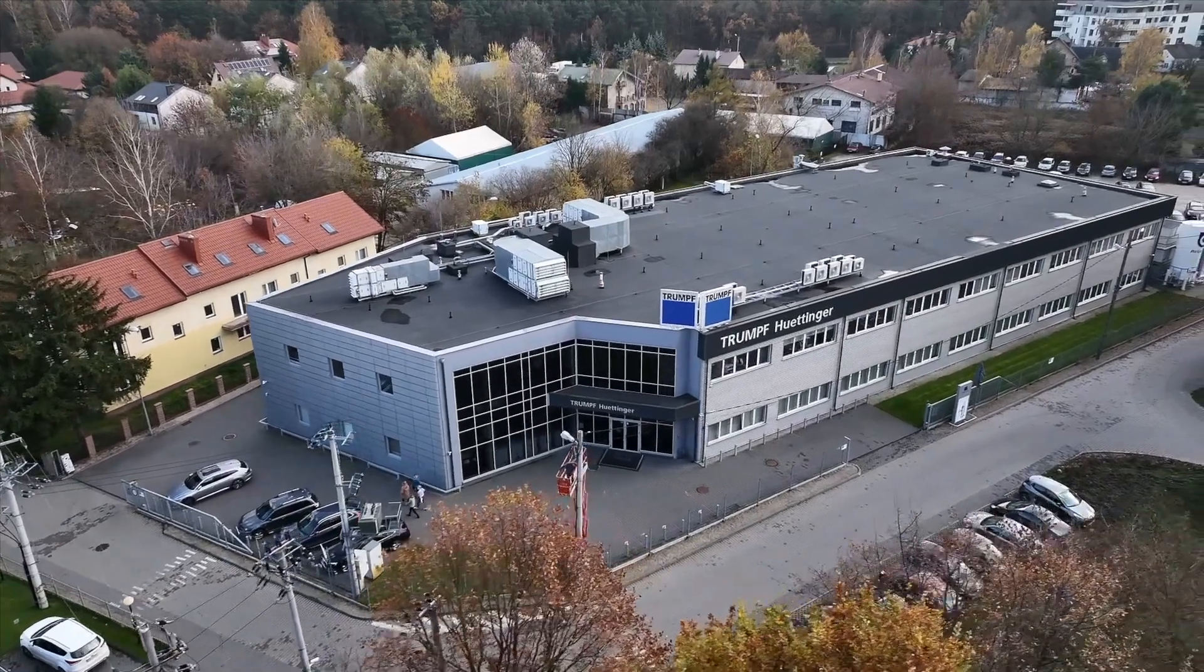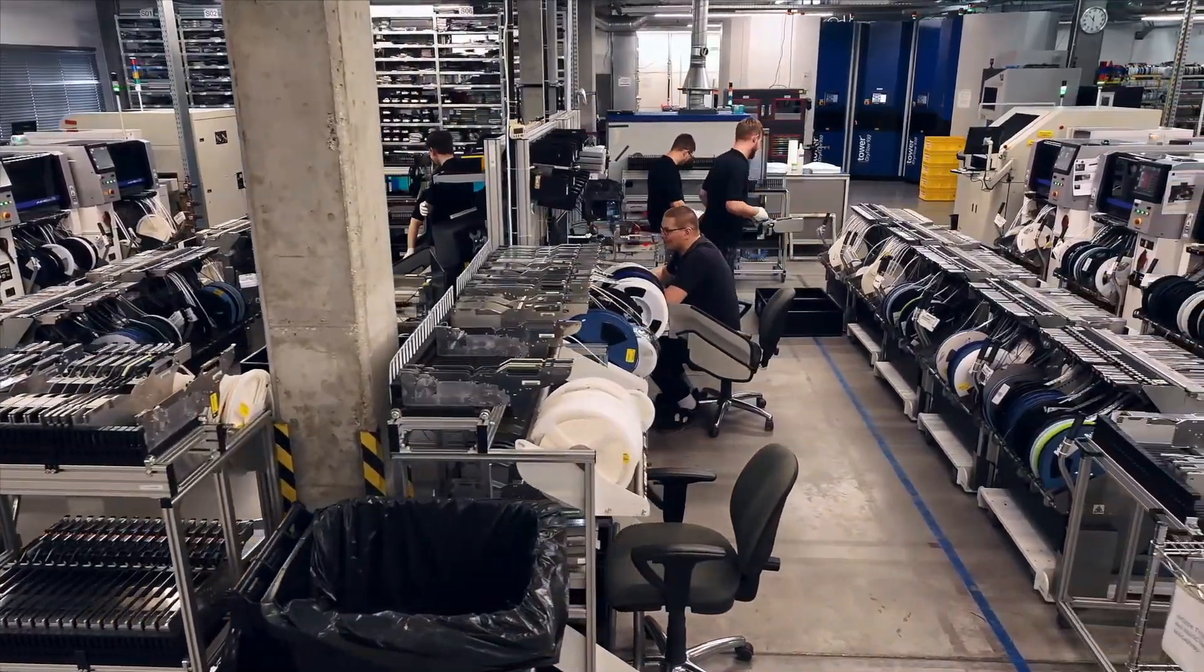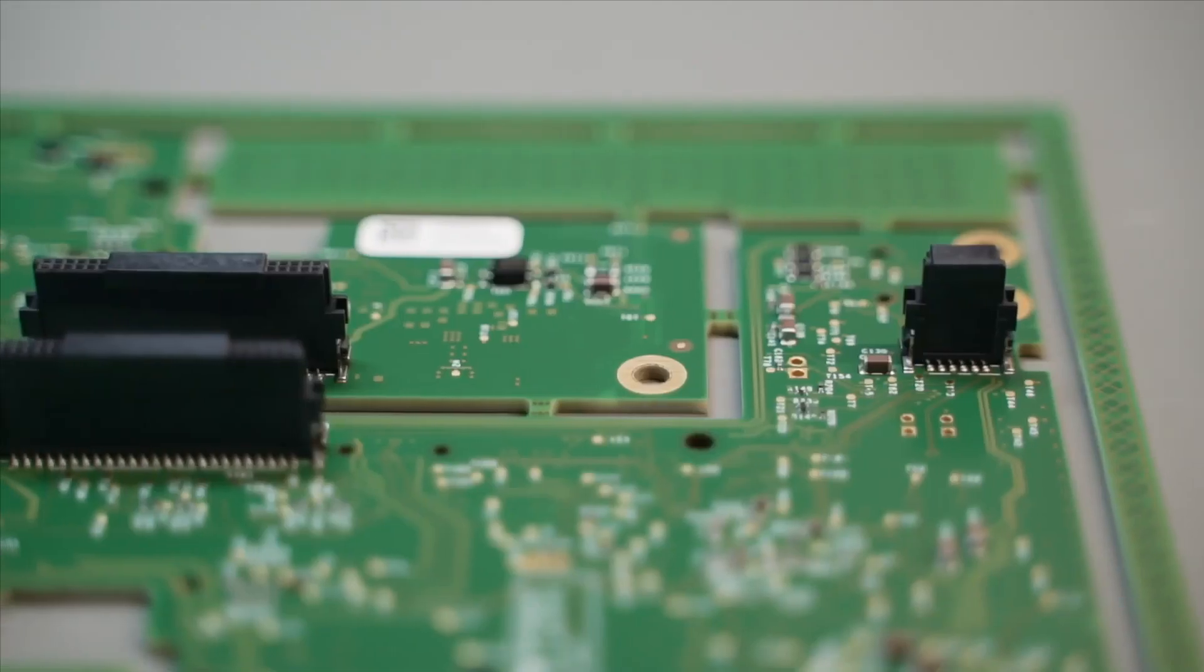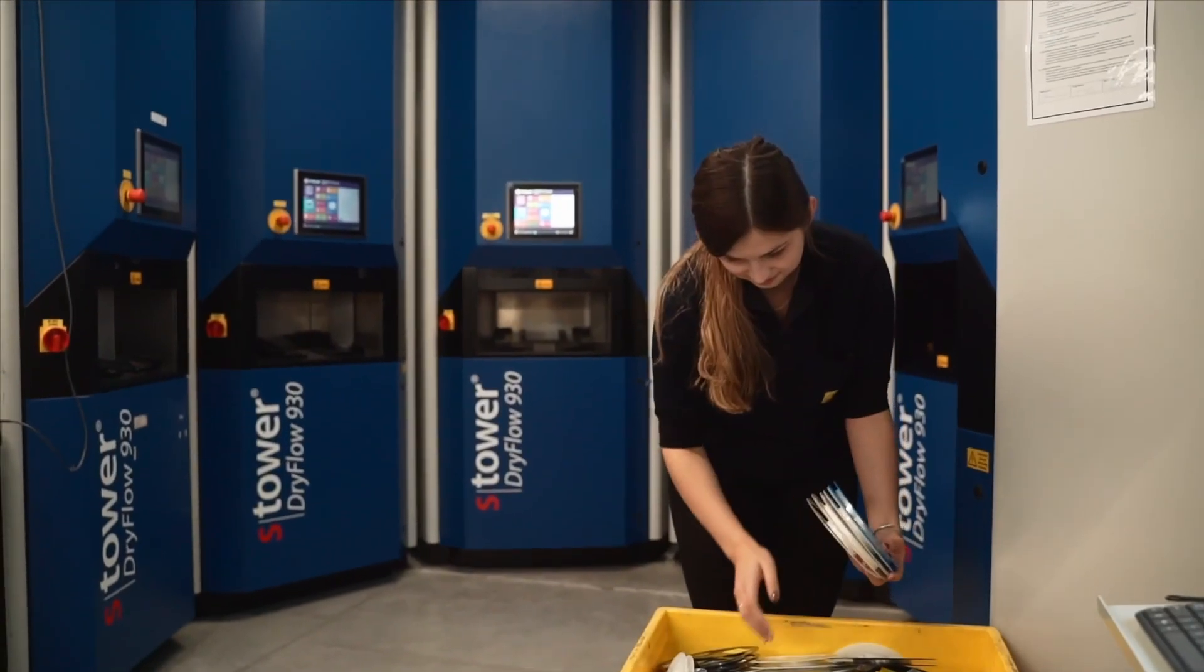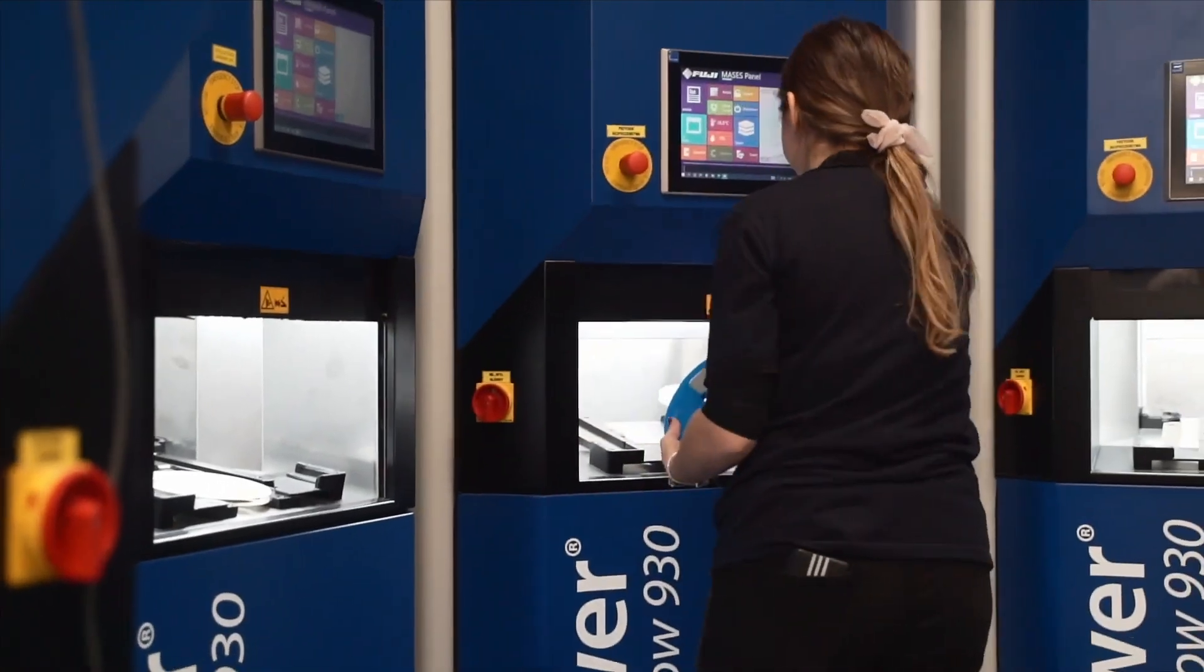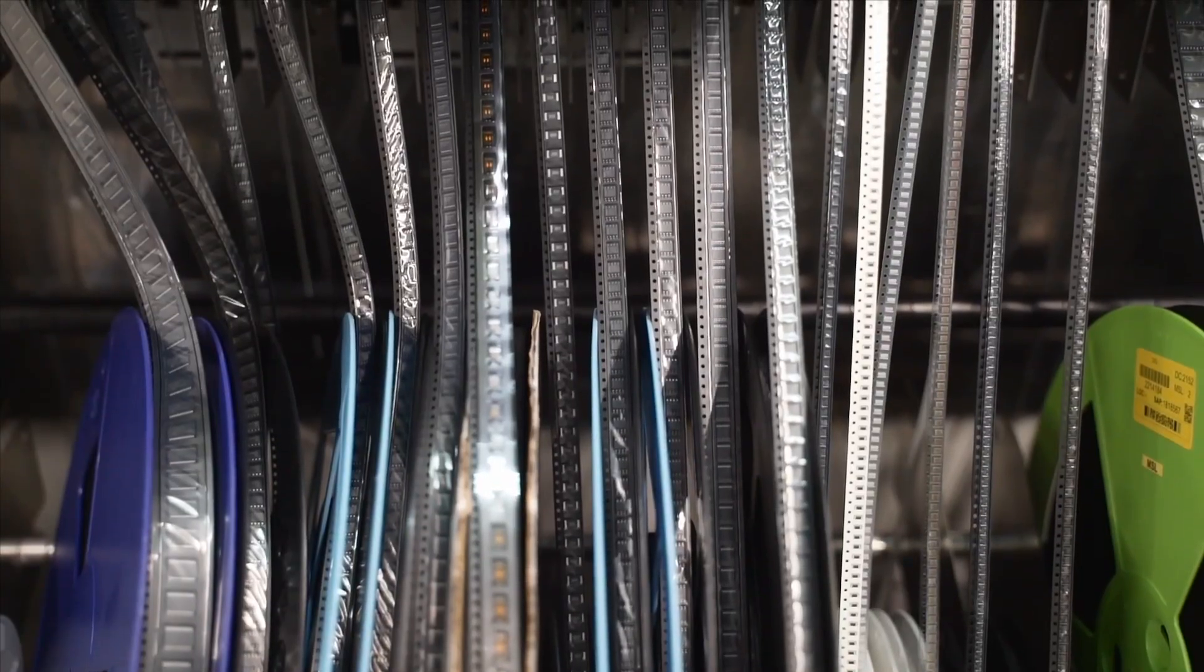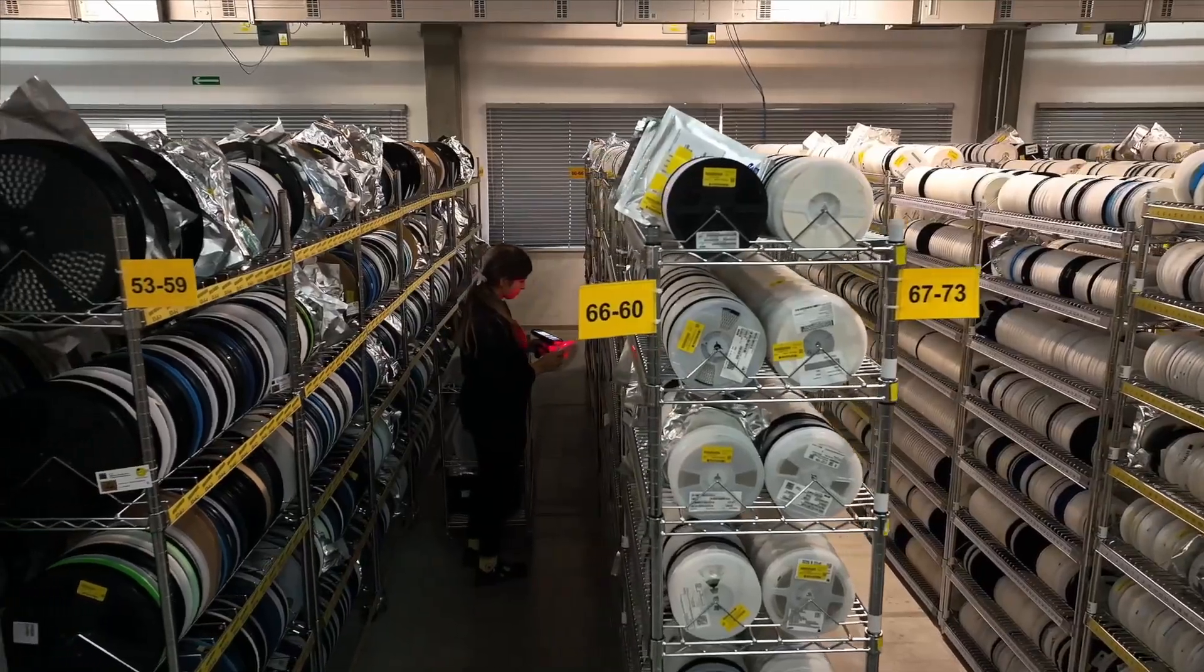Now we move to the electronics production department. Here, electric components are mounted on PCBs. Materials that will be mounted on the board, such as resistors, capacitors, and integrated circuits, are delivered mainly in reels and registered in the system. The reels go to the appropriate rack and then directly to production.